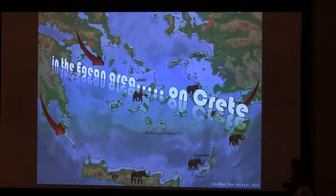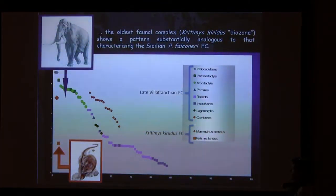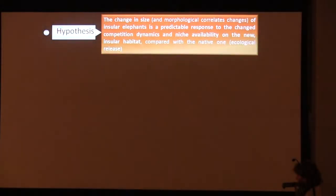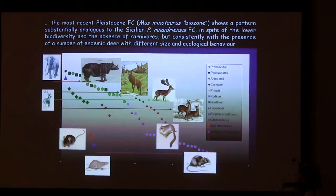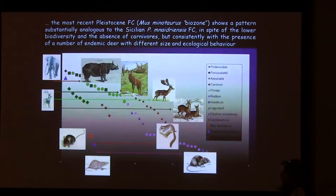Looking at the other side of the Mediterranean, on Crete, the oldest Cretan misopithecal complex shows more or less the same pattern as the Sicilian Palaeoloxodon, as does the most recent Mammuthiotaurus fauna complex — in spite of the fact that on Crete, large predators were not present but competitors were there, differing in size and ecological behavior.